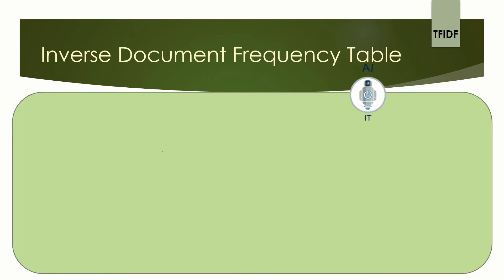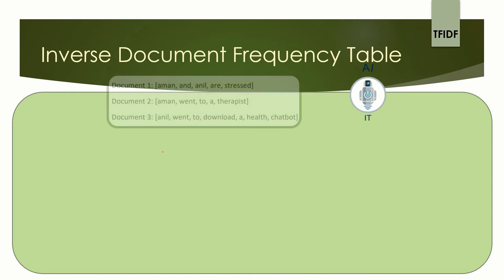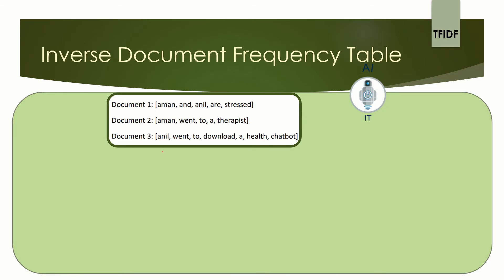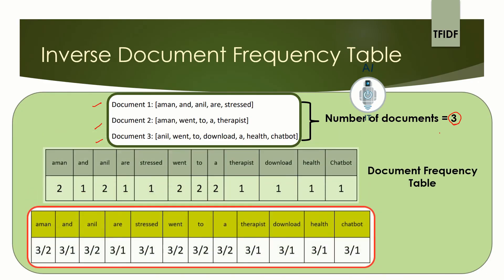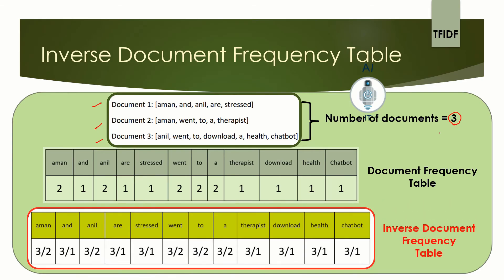The third table is the inverse document frequency table. To create it, take the number of documents as the numerator over your document frequency table values. We have 3 documents, so you take your document frequency table and add 3 as the numerator. It will be 3/2, 3/1, 3/2, 3/1, 3/1, and so on.